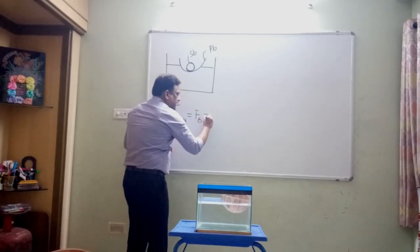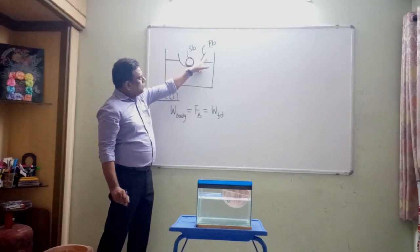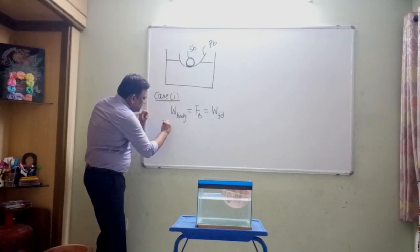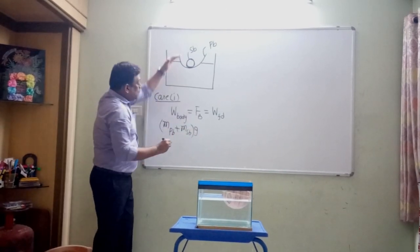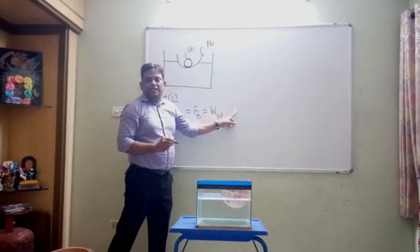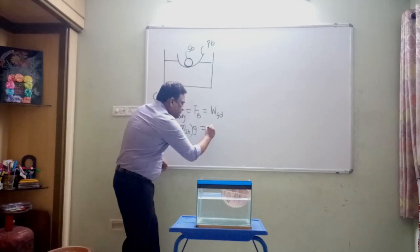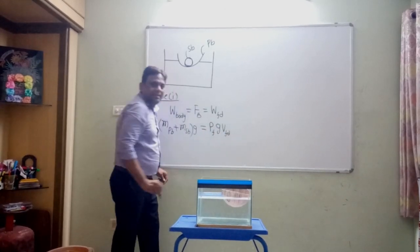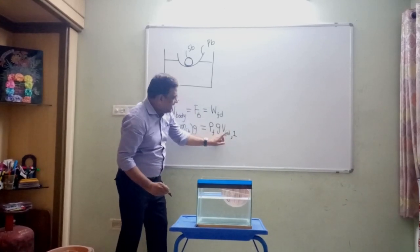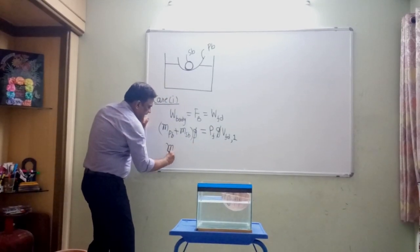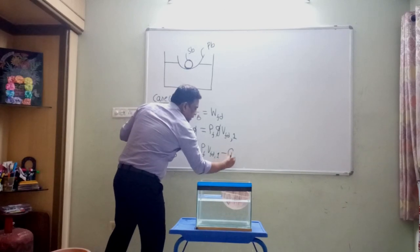We know that buoyancy force equals the weight of the fluid displaced. Weight equals mg. Here we have plastic bowl and steel ball, so the total mass is mass of plastic bowl plus mass of steel ball. That times g gives the weight of the floating system, and this equals the weight of the fluid displaced — which is rho times g times volume. Therefore: rho_F times g times VFD1, where VFD1 is the volume of fluid displaced in case 1. So: (M_PB + M_SB) = rho_F × VFD1. This is equation number 1.